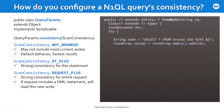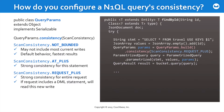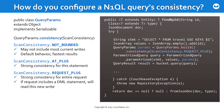So it might look something like this. Just like before, we are creating a parameterized query, but we're also building a QueryParams object and assigning to its consistency property a ScanConsistency of REQUEST_PLUS, so that we get immediate strong consistency for all statements in this request. That params object is then passed along with the statement and the values to create the query object, which is then passed off to the server.